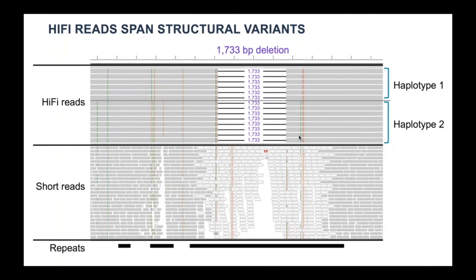Here is an example of a structural variant. On the top, you see the PacBio HiFi reads; on the bottom, short reads for the same sample. HiFi reads are long enough to span the entire region, and the 1,700 base pair deletion can be clearly detected, whereas the short reads are not mapping well to the region because of an underlying repeat expansion. In addition, HiFi reads enable phasing of the alleles, confirming that this is a homozygous deletion.